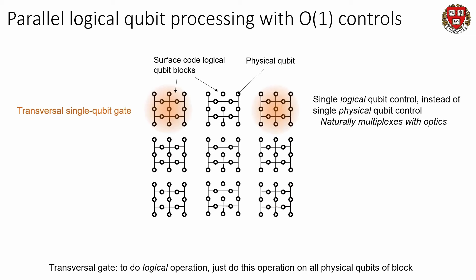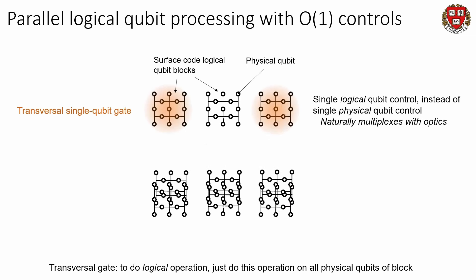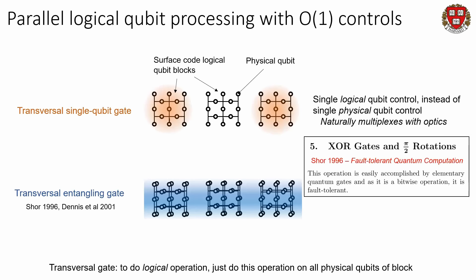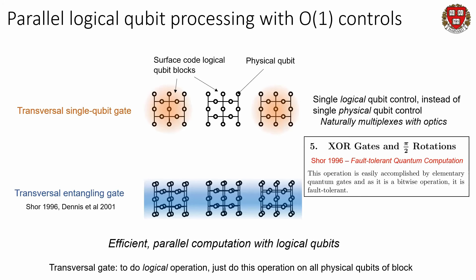To do two-qubit gates, we can also do this very efficiently — we just pick up these grids and interlace them with each other, getting pairwise entanglement between all of the individual physical qubits of the two corresponding blocks. This allows us to do an entangling gate in a transversal way. Shor described these transversal operations as 'easily accomplished because it's a bitwise operation' — and this is true not only theoretically, but also in practice from an experimental perspective.